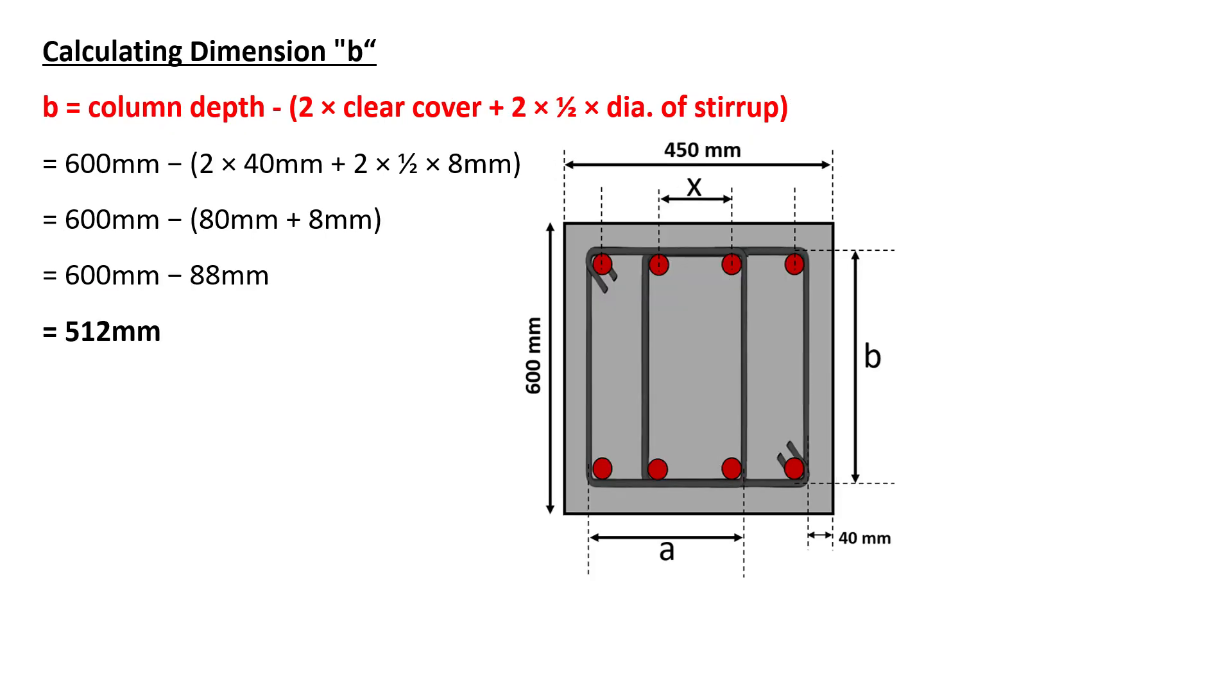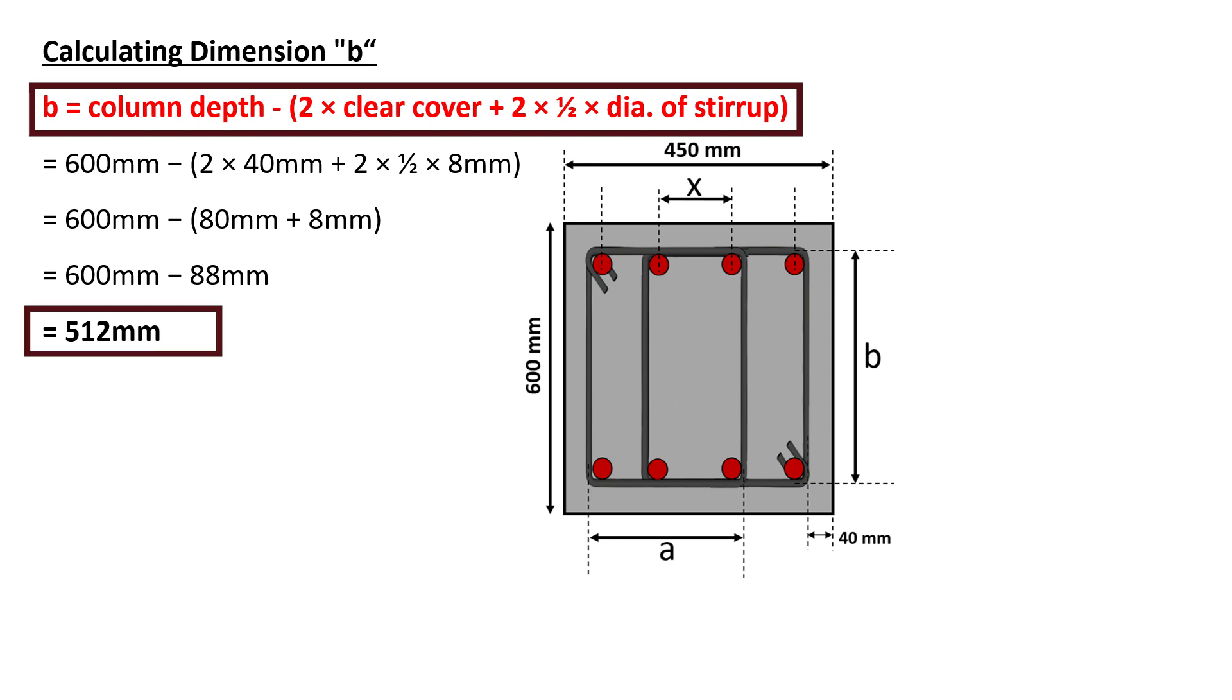Now let's calculate B which is given by the formula column depth minus twice clear cover plus twice half the diameter of stirrup. The depth of column is given as 600 mm, clear cover is 40 mm and the diameter of stirrup is 8 mm. On substituting these values, B will be equal to 512 mm.